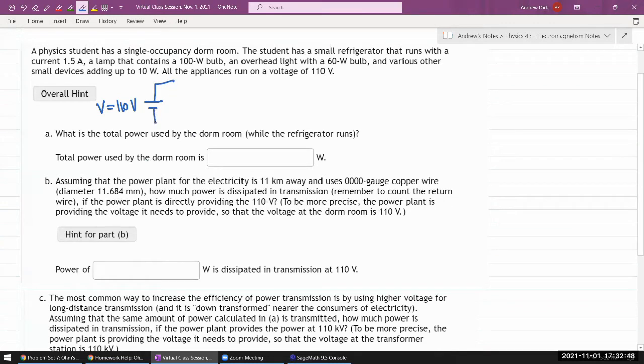So the way all the appliances and any power, the electrical layout is set up, is it's set up so that all the outlets are parallel to each other. So when it describes a small refrigerator that runs with a current, what it's describing is I have some unit that draws a current connected to 110 volts.